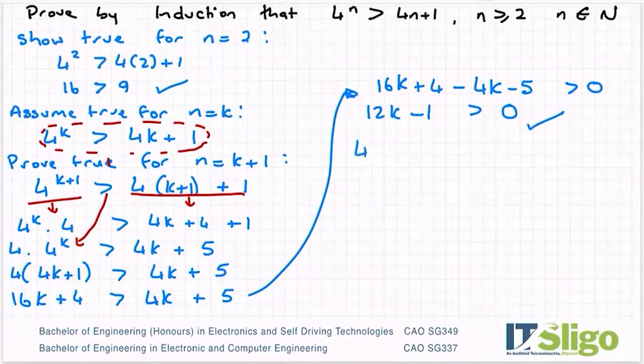Therefore, 4 to the power of k plus 1 is greater than 4k plus 5, or however you want to write it.